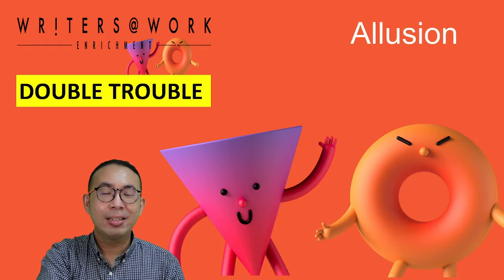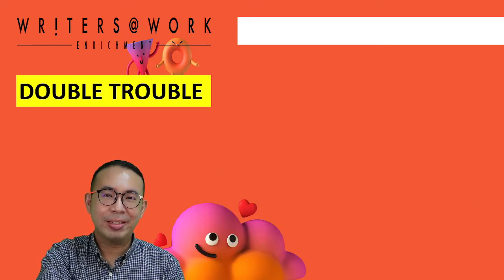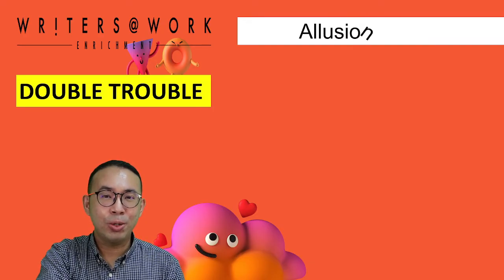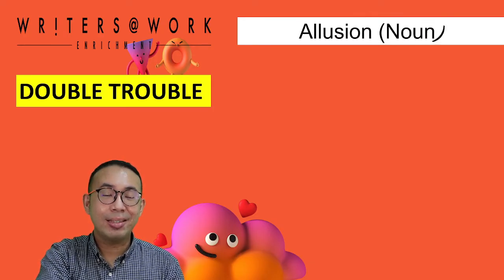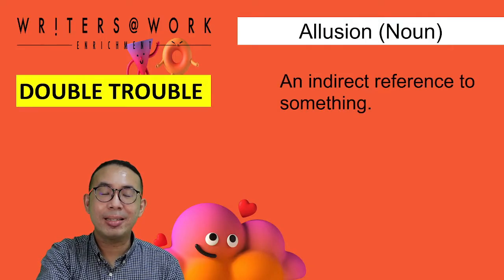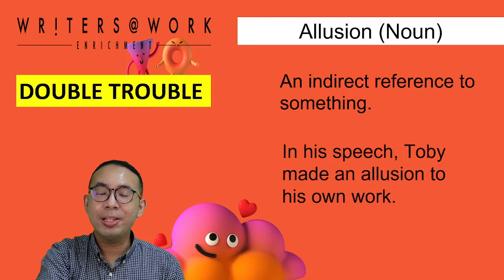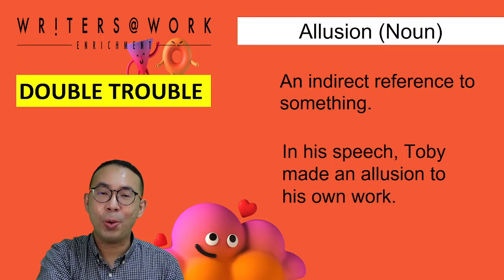They are allusion and illusion. Now, let's look at the first word: allusion. It is spelled as A-L-L-U-S-I-O-N. It is a noun. It means an indirect reference to something. For example, in his speech, Toby made an allusion to his own work.